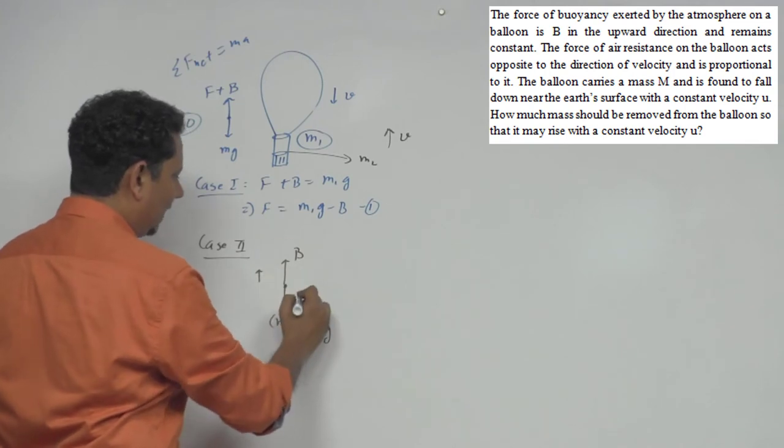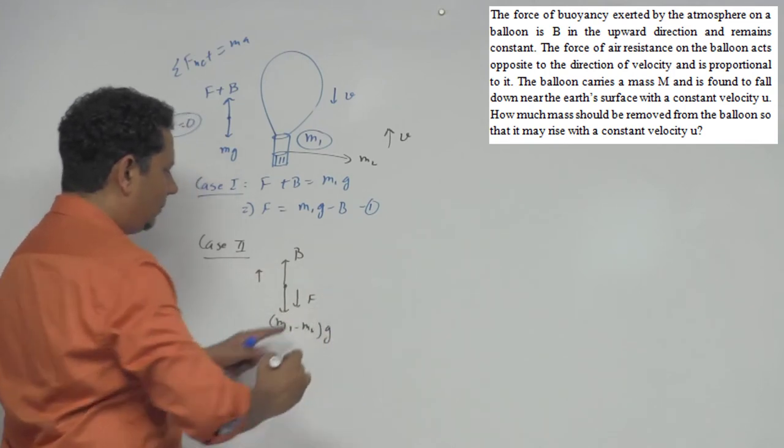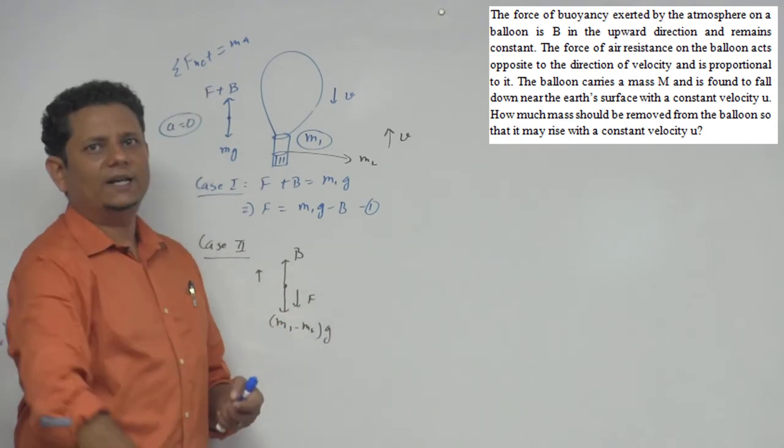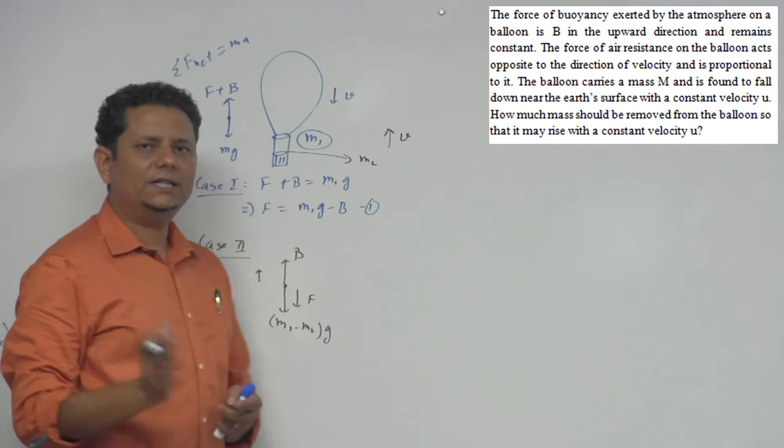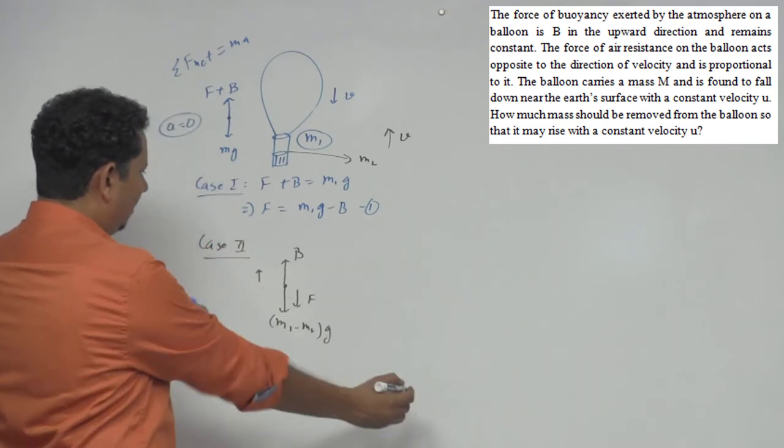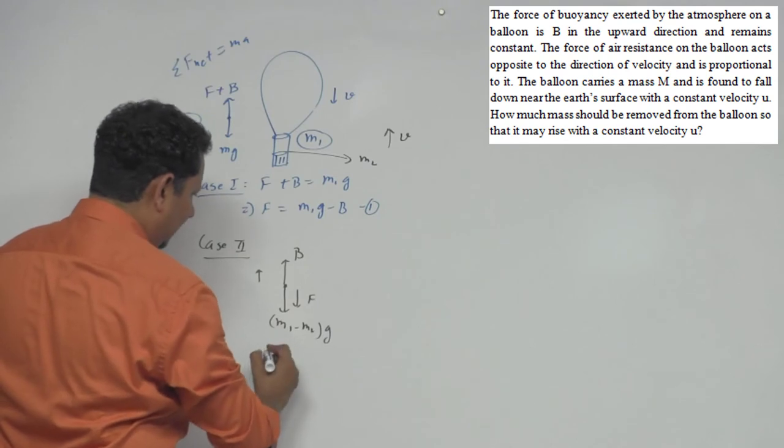Because the balloon is going upward, air resistance will now act downward because it acts opposite to motion. So this will be your second equation. In various forms this can be written as